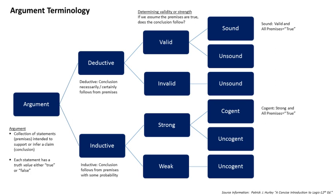Deductive arguments may be either valid or invalid. If an argument is valid, it is a valid deduction, and if its premises are true, the conclusion must be true — a valid argument cannot have true premises and a false conclusion. An argument is formally valid if and only if the denial of the conclusion is incompatible with accepting all the premises. The validity of an argument depends not on the actual truth or falsity of its premises and conclusion, but solely on whether or not the argument has a valid logical form.